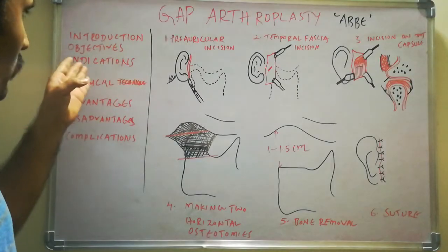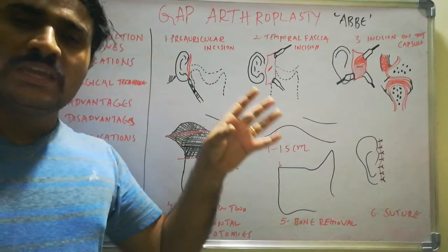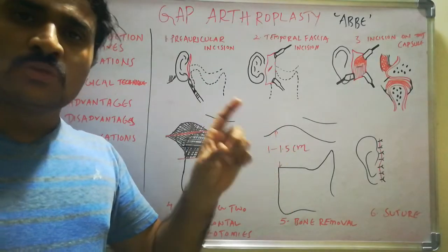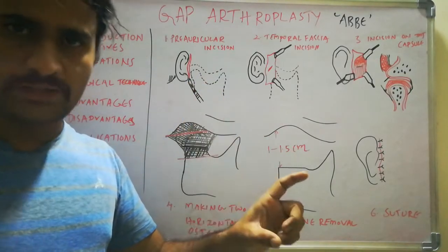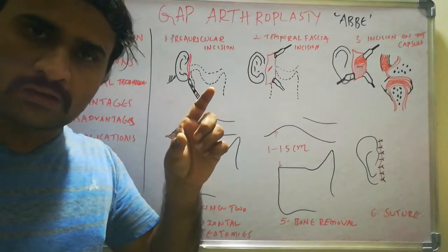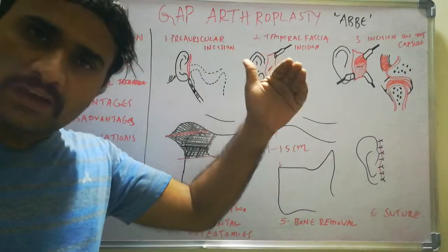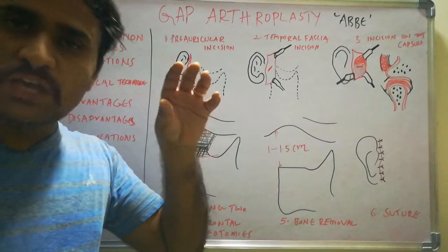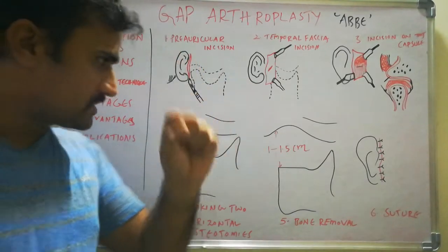Gap arthroplasty is mainly indicated for true ankylosis of the temporomandibular joint — that is, ankylosis due to intra-articular causes — where there is bony fusion between the glenoid fossa and the condylar stem, which we are going to remove.